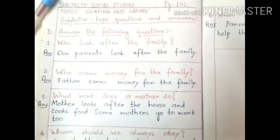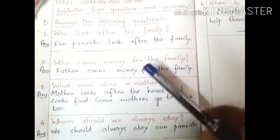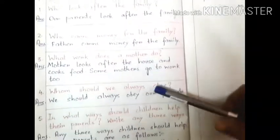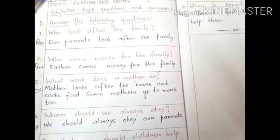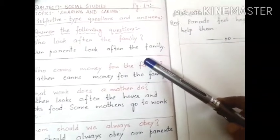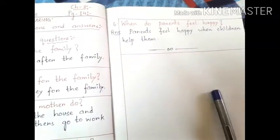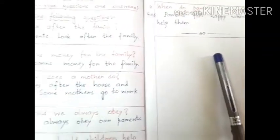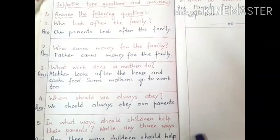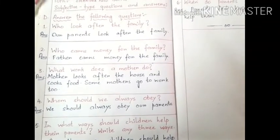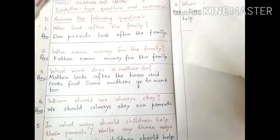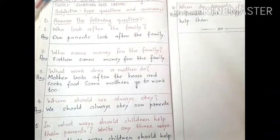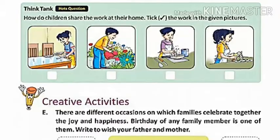First write all the answers in your copies, then say and write, and then learn them. These will come in your exams. We have done objective type questions in the last video; this was subjective type. So learn them, understand them, say and write, revise and practice.